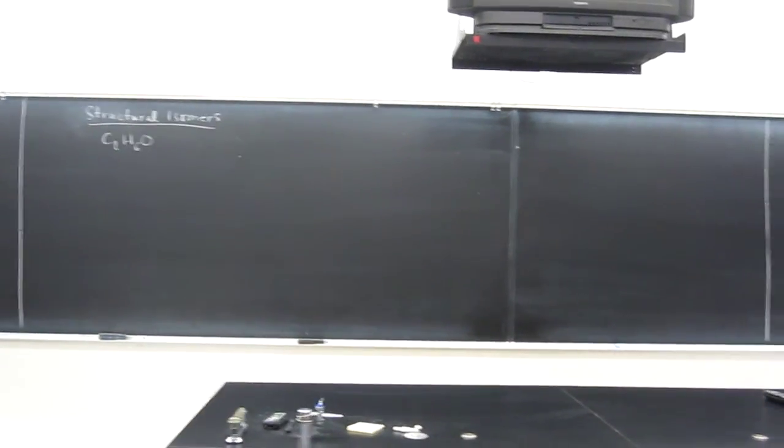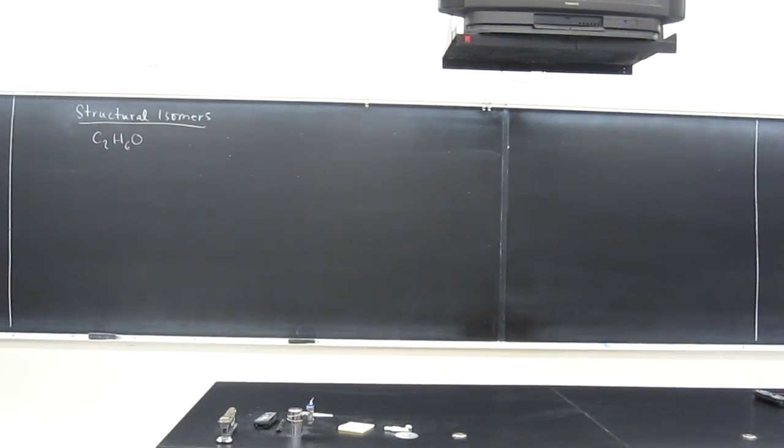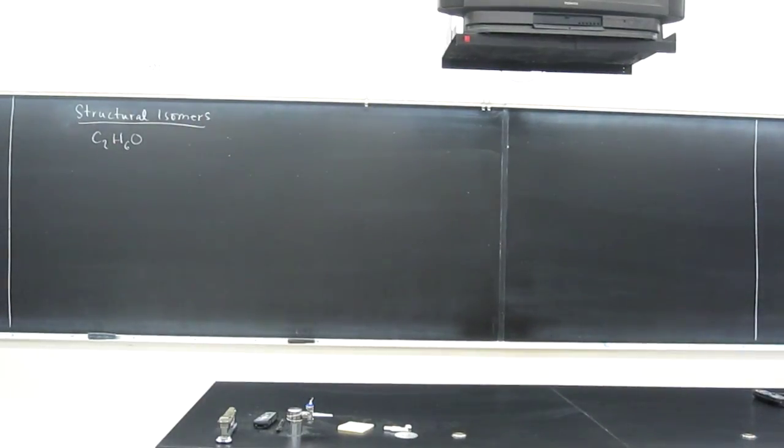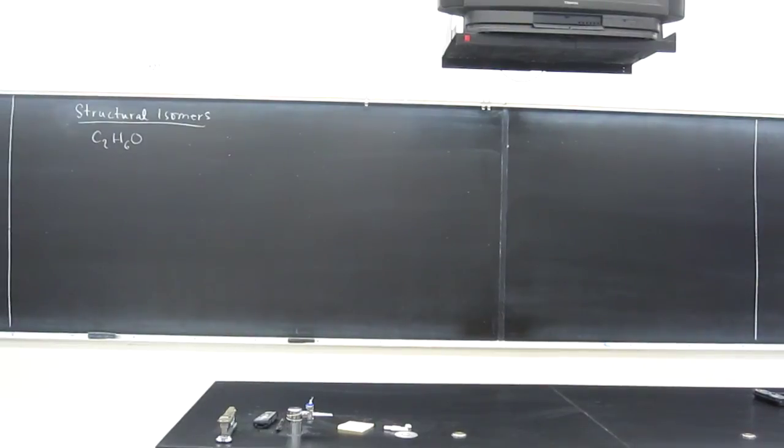Let's just continue our discussion of structural isomers. So recall that isomers are compounds that have identical molecular formulas but are different structurally. These structural isomers are isomers whose atoms are bonded in different patterns.